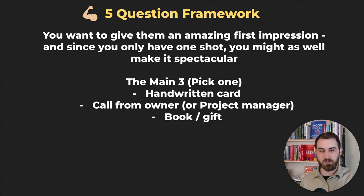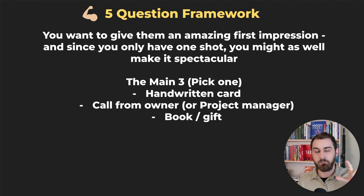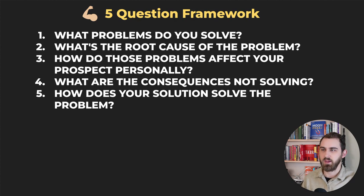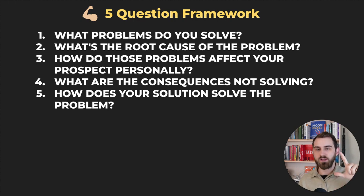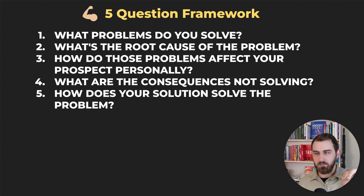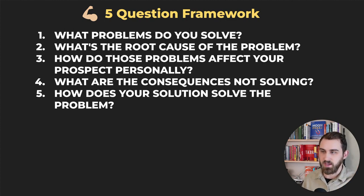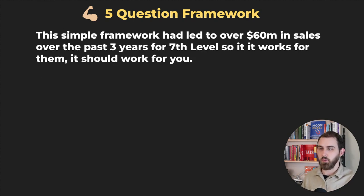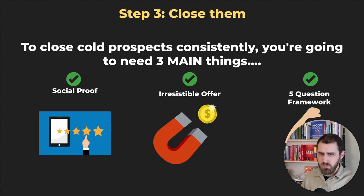After they buy, there are three things we like to do: a handwritten card, a call from the owner or project manager right away, and a book or gift. The five question framework recap: what problems do you solve? What is the root cause of their problems? How do those problems affect them personally? What are the consequences of not solving the problems? And how does your solution solve their problems? This framework has closed over $60 million in sales in the last three years for seventh level.